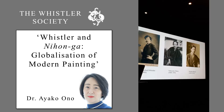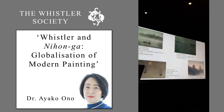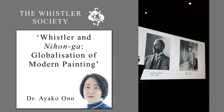Whistler met Kaneko Kentaro, who was a friend of Okakura Kakuzo, at the Athenaeum Club. Fenollosa was very close to Kaneko Kentaro, who met Whistler in London. Also, Shugyo Hiromichi, who helped with the collection of Frank Lloyd Wright's ukiyo-e collection, met Whistler. So there are wheels within wheels. So I know of two Japanese people who met Whistler.